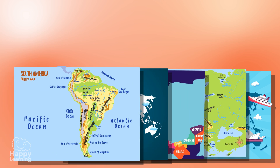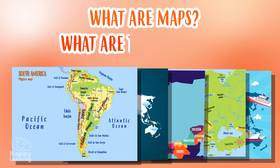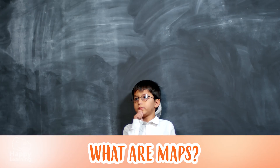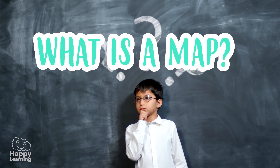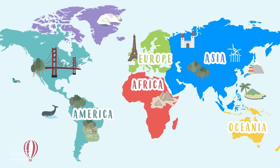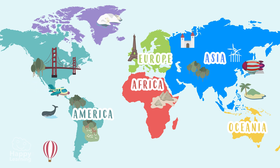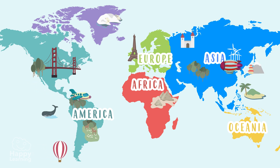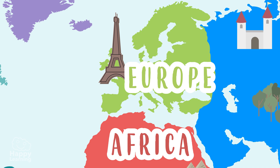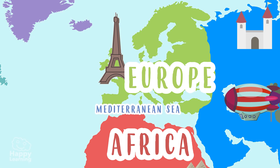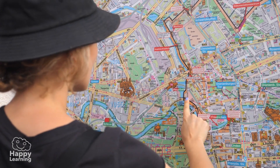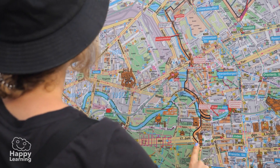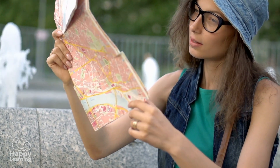Today we're going to find out what maps are and what they are used for. First of all, what is a map? A map is a graphic representation of all or part of the Earth's surface, including the seas and oceans. In other words, a map is a drawing that gives us information.